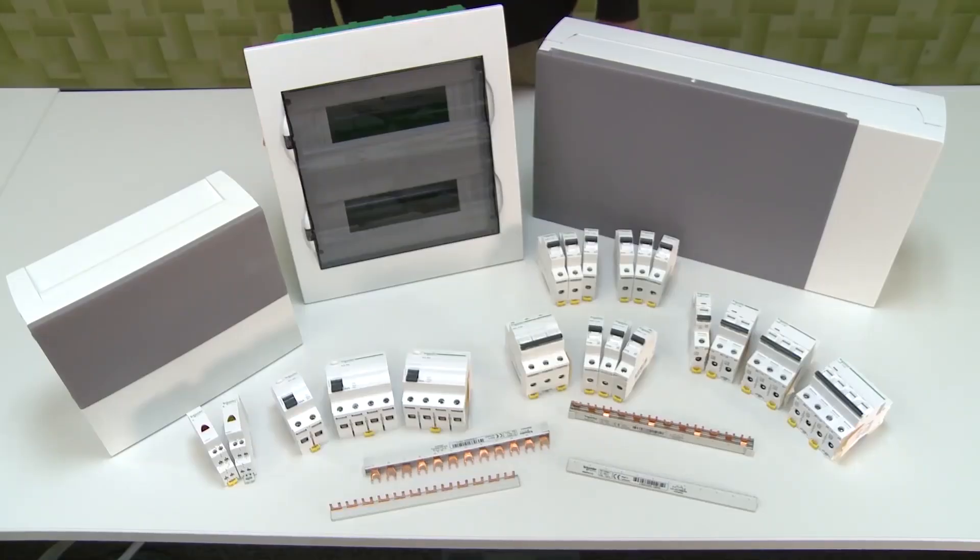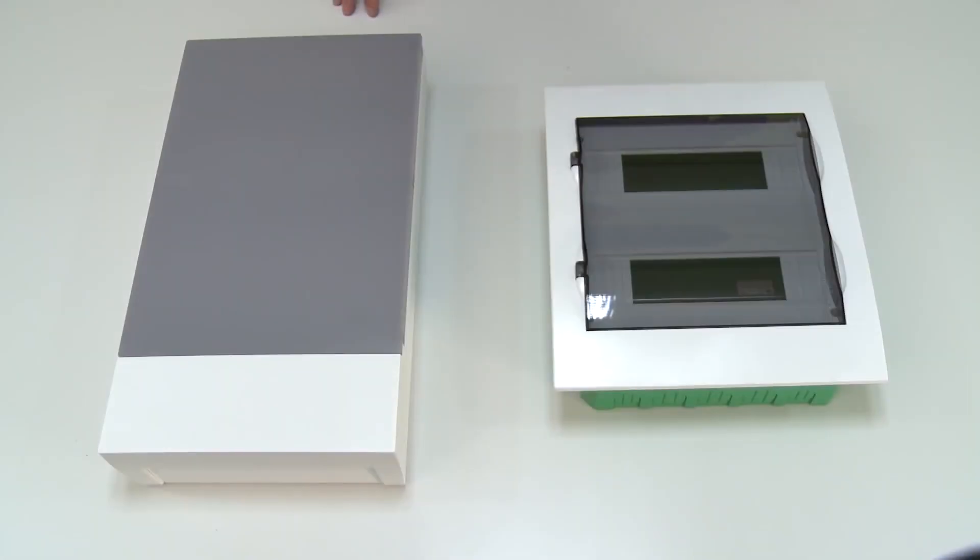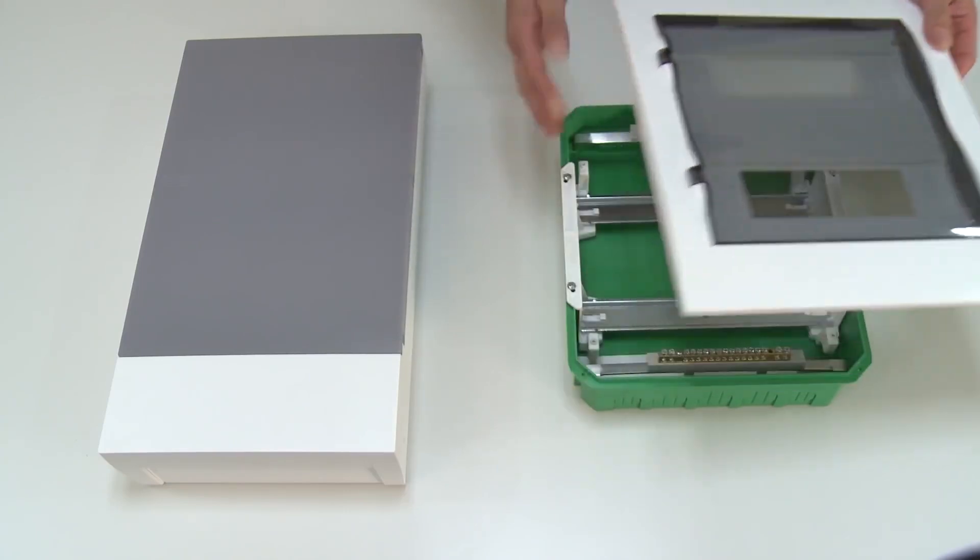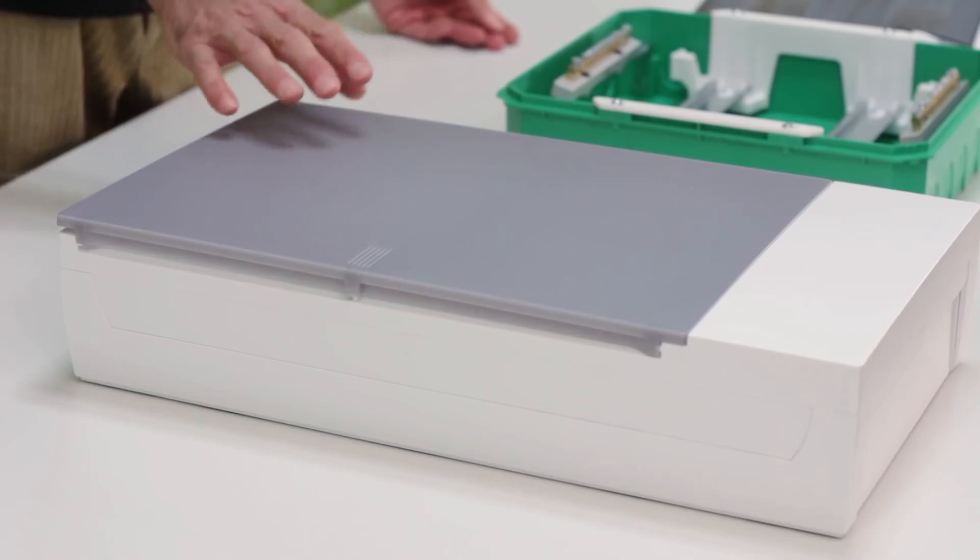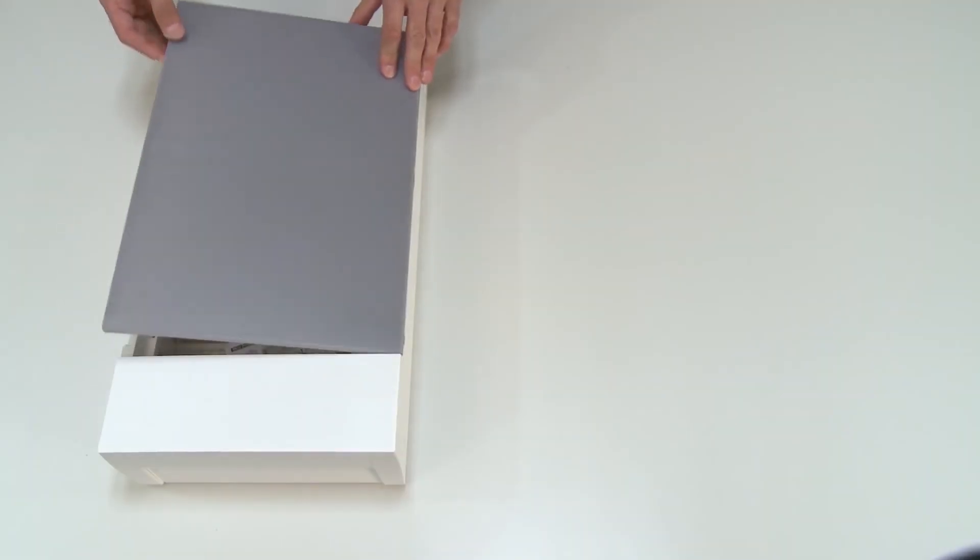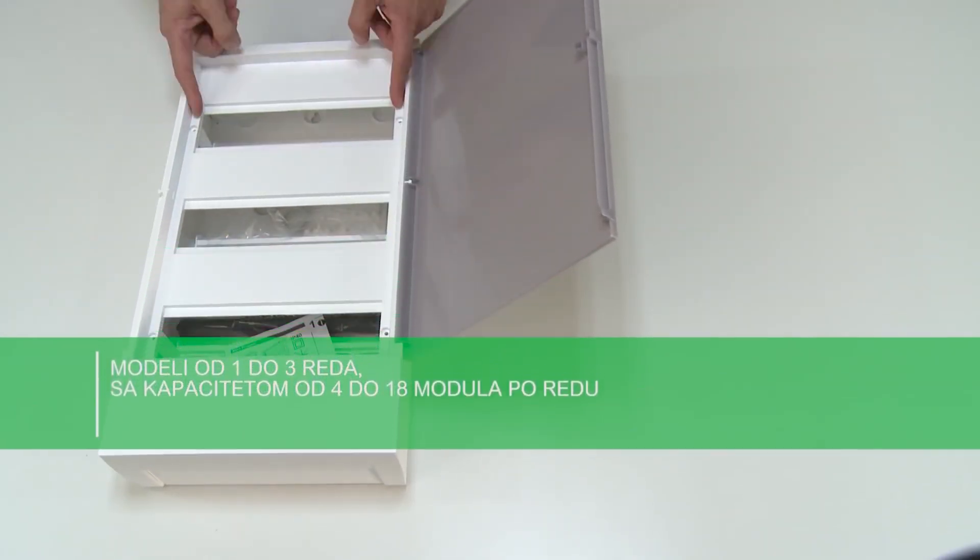Electricians always have a problem when choosing equipment for a specific case. According to the method of installation, modular enclosures are divided into two groups: those intended for mounting into the wall or flush mounted, and those intended for mounting on the surface of the wall or wall mounted. Today we use this one for mounting on the surface of the wall.